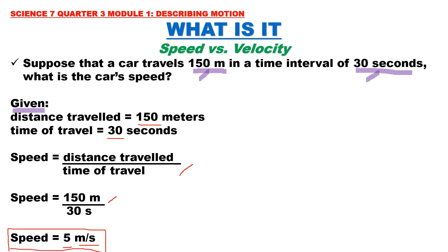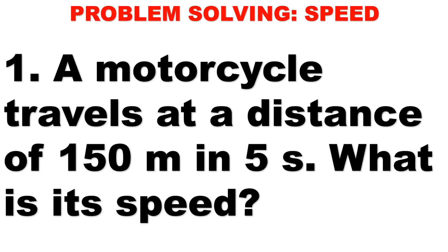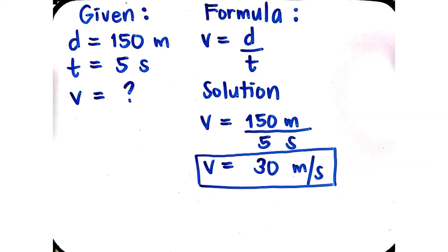Another problem: A motorcycle travels a distance of 150 meters in 5 seconds. What is its speed? Given: distance = 150 meters, time = 5 seconds, speed = unknown. Formula: speed equals distance divided by time (v = d/t). Solution: speed = 150 meters ÷ 5 seconds = 30 meters per second. Every second, the object moves 30 meters.